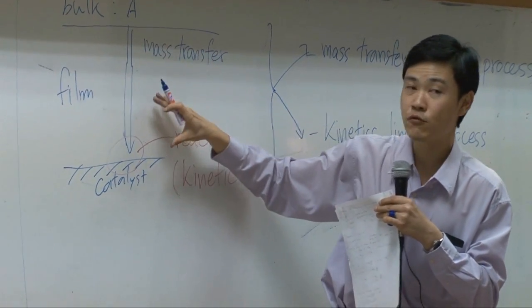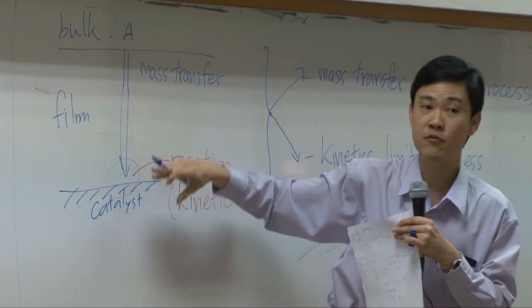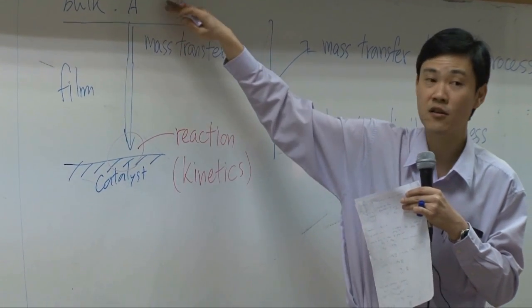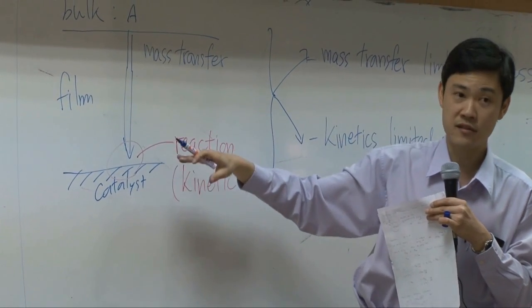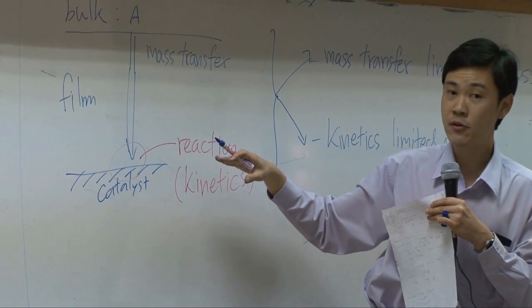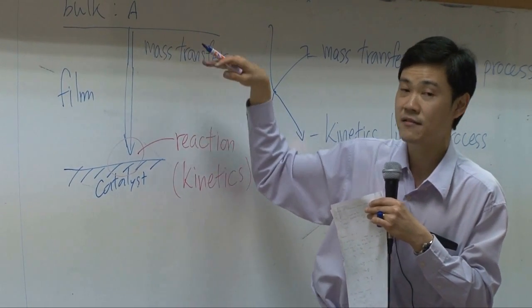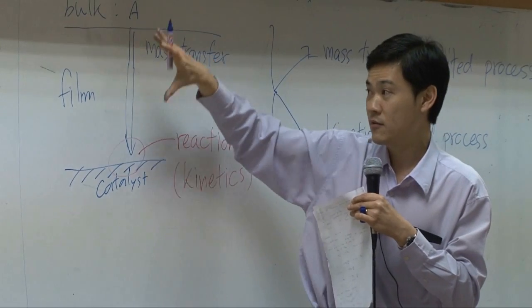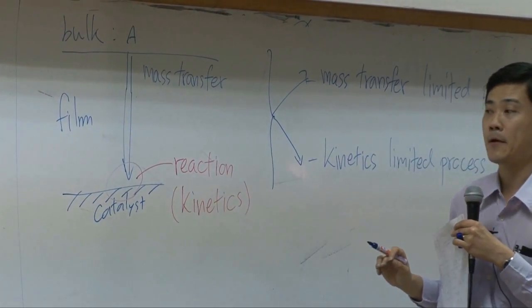If you want mass transfer to be speeded up, you need to increase the concentration difference. So, increase the concentration in bulk. Or decrease the resistance. The way to decrease the resistance is to flow the gas faster so that resistance film will become thinner.